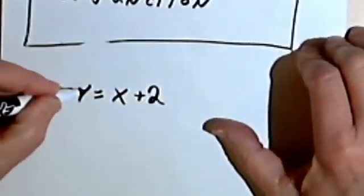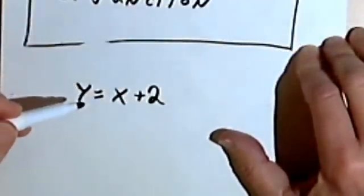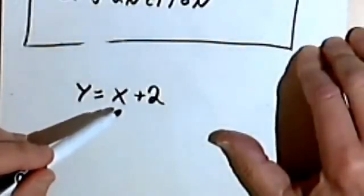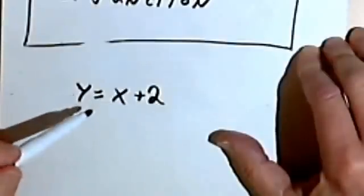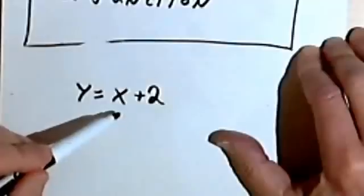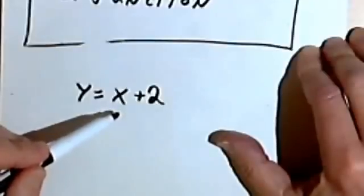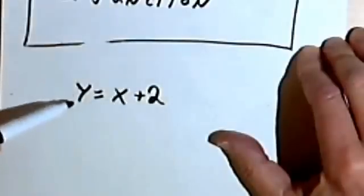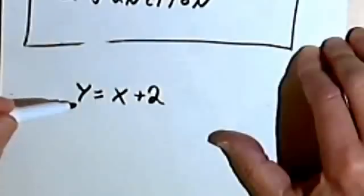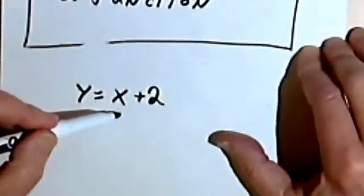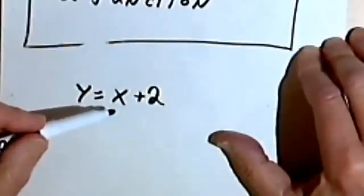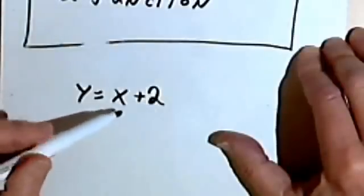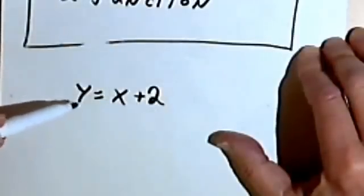A function is a rule such that whatever input I give it, it will always give me for that input a specific output. In other words, let's say I decide that x is 3 — my input is 3. This rule, y equals x plus 2, will always give me an output — a y, a dependent variable — of 5. If I say that x is negative 2, the output will always be 0. I can change the input, but each time I change the input, I'm going to get a predictable output.